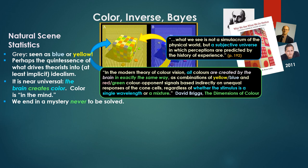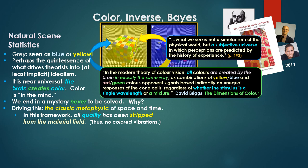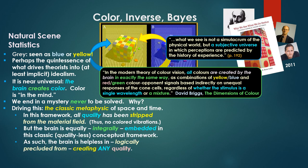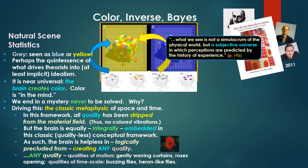So it's near universal. The brain creates color. Color is in the mind, in some perceptual space, a mental space. But we end in a mystery never to be solved. Why? Driving this entire conception, color is only in the mind and mental space, is a classic metaphysic of space and time. In this framework, all quality has been stripped from the material field. Thus no colored vibrations in the material field, for example.